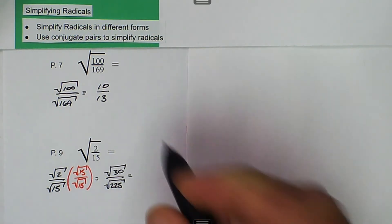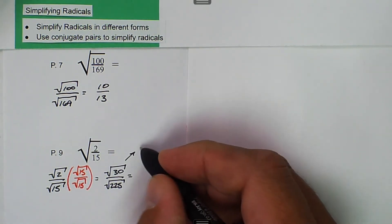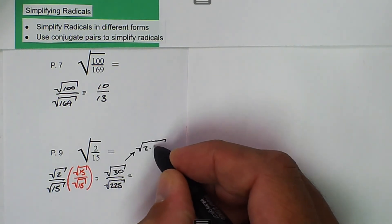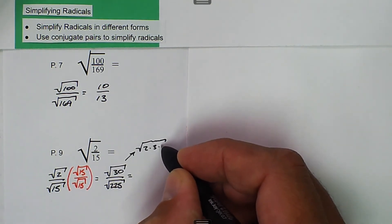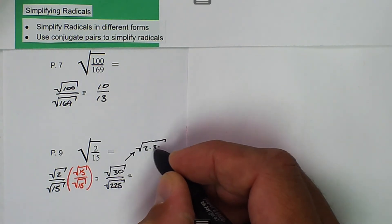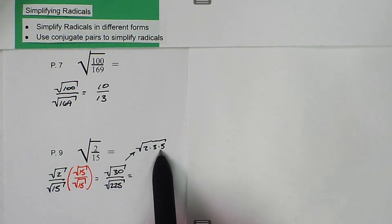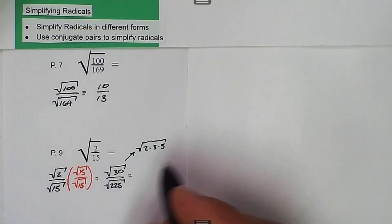If we broke this down, it would be the square root of 2 times 3 times 5. These are all prime numbers, and we don't have any duplicates, so we can't reduce that at all. It just stays the square root of 30.